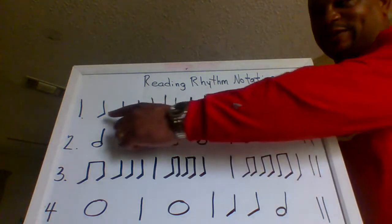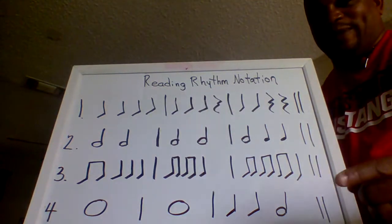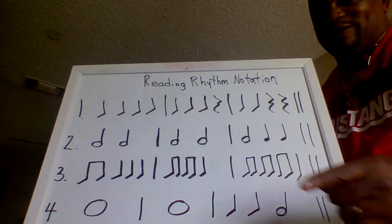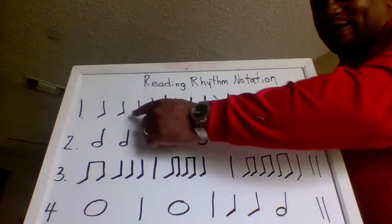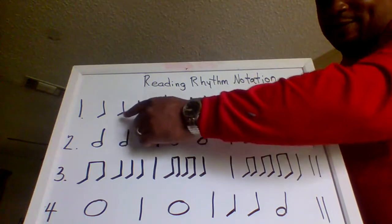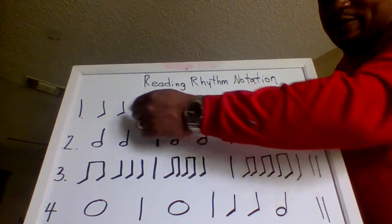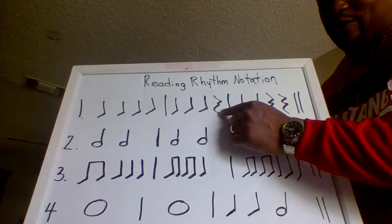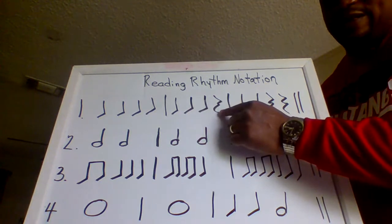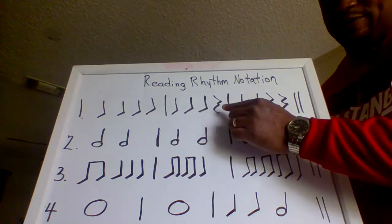Let's go back and talk about the quarter note. This is the quarter note and the quarter note gets one beat, so for every quarter note we're going to clap one beat. When we see this symbol, which is a quarter rest, we are going to not clap — we're just going to say 'rest' on that beat.